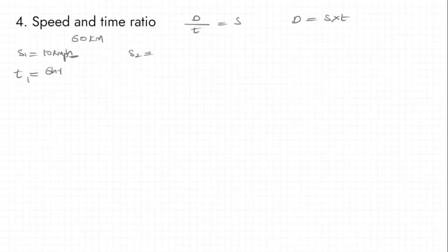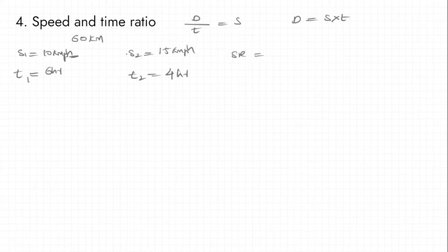Now, whether I travel at 60 km per hour or 15 km per hour — the speed and time ratio is 10 to 15.